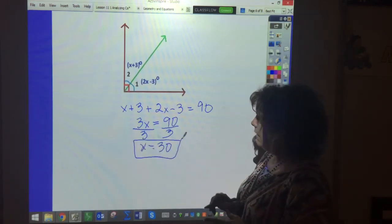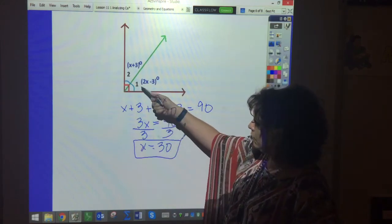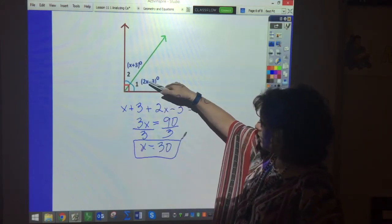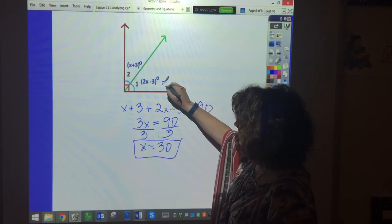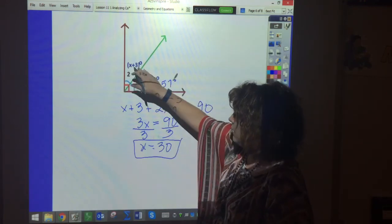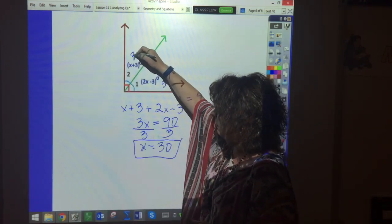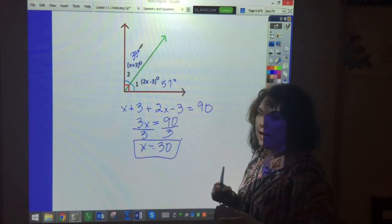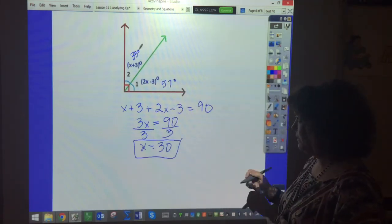And that fits nice and neat. So angle 1 is 30 times 2. 60 minus 3 is 57. And 30 plus 3 is 33. So those are the angle measures. So you have to substitute back in.